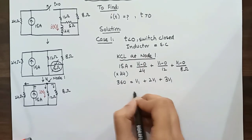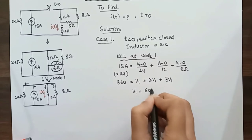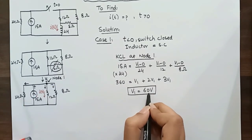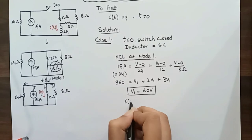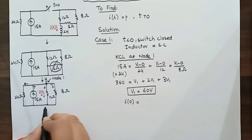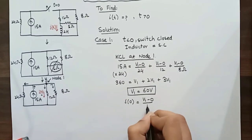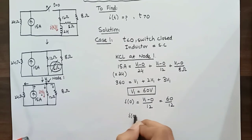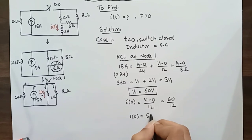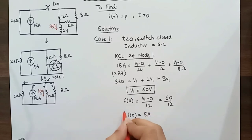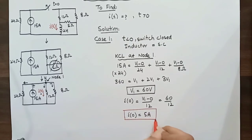We can find the value of voltage V1 at node 1 that is equal to 60 volts. So I at t equals 0 is 5 amperes. Current through an inductor cannot change instantaneously. So current at t equals 0 will be same as it was just before the time t equals 0.